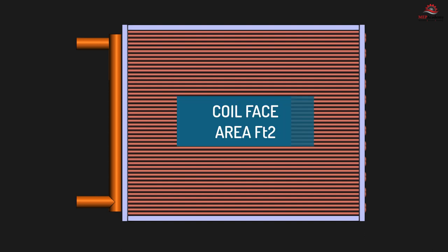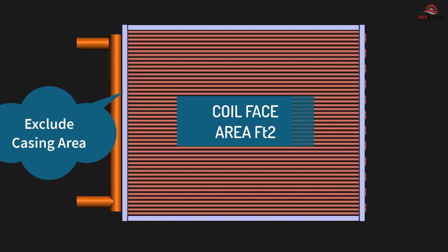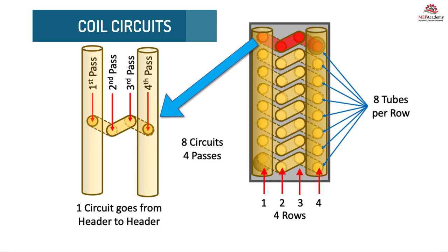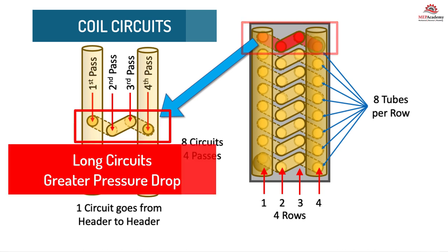The face area is considered that portion of the coil which air passes through, excluding the casing area. To calculate the face area of a coil, you measure the height and length from the inside of the coil casing. Circuiting refers to the path of travel from when the water enters the coil until it leaves. The circuit starts where the tube attaches to the supply header and travels back and forth until it attaches to the return header. The longer the path for the water, the greater the pressure drop and the lower the flow rate, giving the water more time to absorb or reject heat.